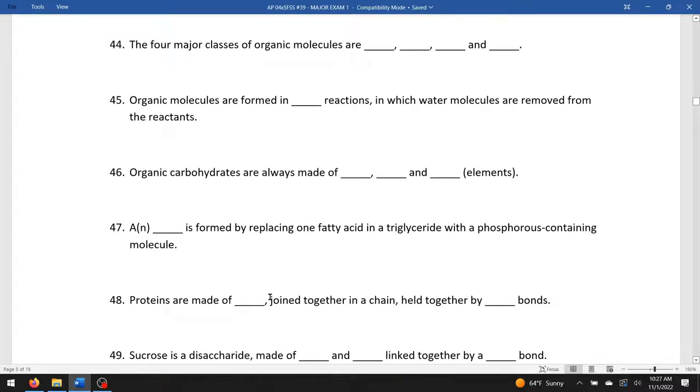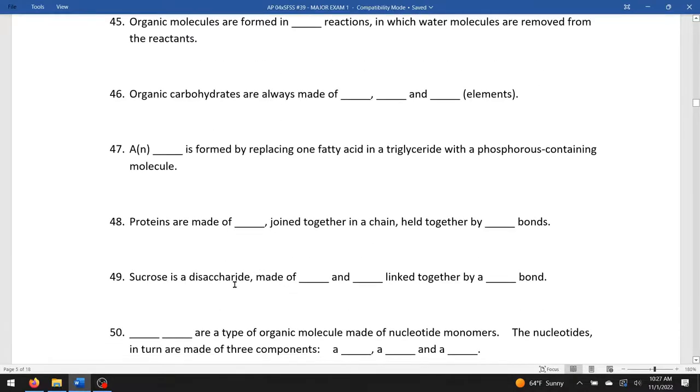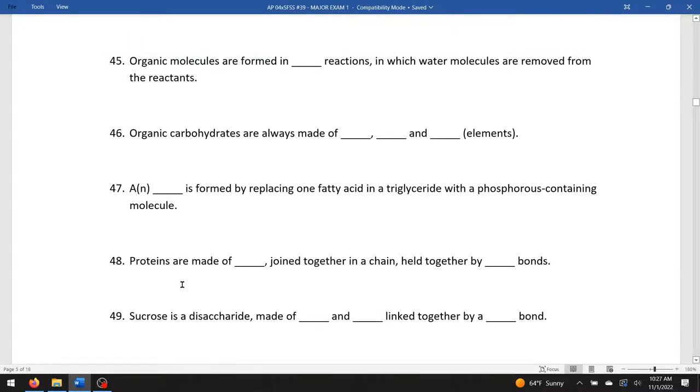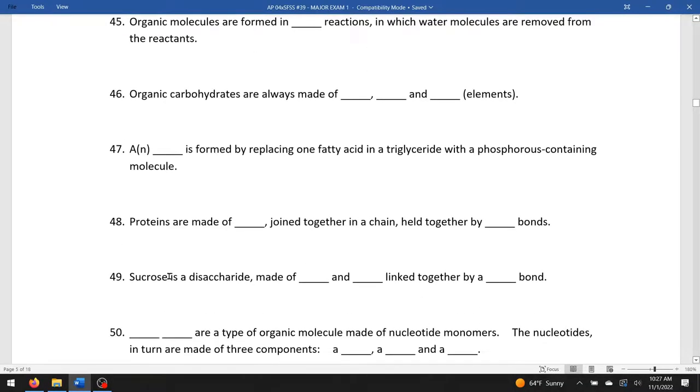Proteins are made of amino acids joined together in a chain held together by peptide bonds. Sucrose is a disaccharide. It's made of glucose and fructose, and linked together with a glycosidic bond.